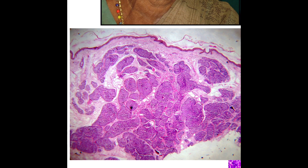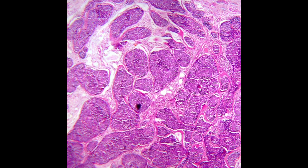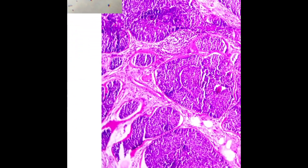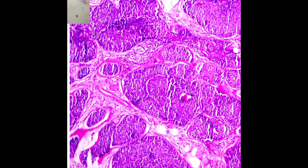By now most of you would suspect a case of cylindroma. At higher magnification, the tumor lobules were separated from each other by thin bands of hyaline material. Two types of cells were observed: larger cells with a moderate amount of cytoplasm and a vesicular nucleus in the center of the tumor lobule, and small cells with little cytoplasm and compact nuclei in the periphery.